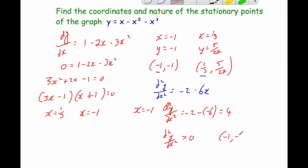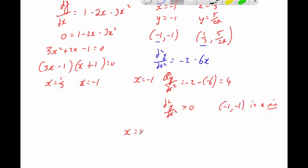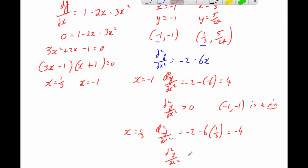For x equals one third: d²y/dx² equals minus 2 minus 6 times one third. Since 6 times one third is 2, we get minus 2 minus 2 equals minus 4. That's negative, so d²y/dx² is less than zero, meaning the point (1/3, 5/27) is a maximum.